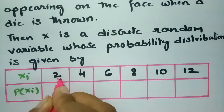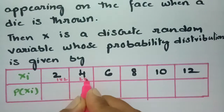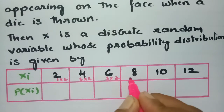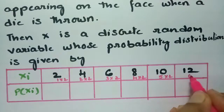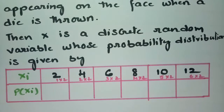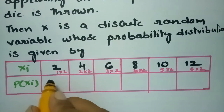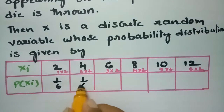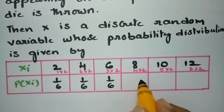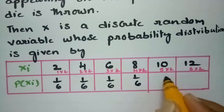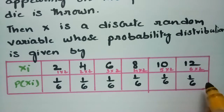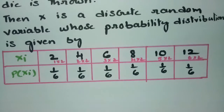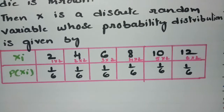So 1×2=2, 2×2=4, 3×2=6, 4×2=8, 5×2=10, and 6×2=12. Since each number appears on the die exactly once, the probability of getting each value of X is 1/6. So 2 appears with probability 1/6, 4 with 1/6, 6 with 1/6, 8 with 1/6, 10 with 1/6, and 12 with 1/6. This completes the probability distribution table.